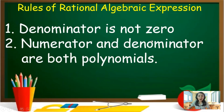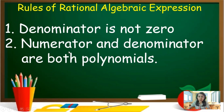Now, there are also rules for rational algebraic expressions. First, the denominator should not be 0. And number two, both numerator and denominator are polynomials. On rule number 2, you should apply the rules of polynomials so that we will know if the numerator and denominator are polynomials.